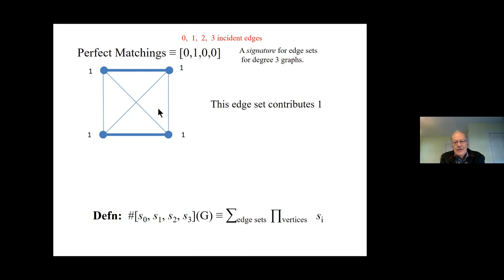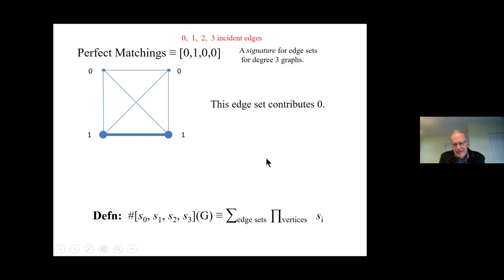So the answer to this problem on K4 is three, because of the 64 possible edge sets only three are perfect matchings: the two horizontal ones, the two vertical ones, or the two crossed ones. This is a generic notation for writing down sum-of-products expressions — like partition functions, with many names. In these signatures I don't have to have zeros and ones; I could have any numbers. This is notation for perfect matchings, and as I said, counting these is Sharp-P complete, while parity is polynomial time and so is existence.